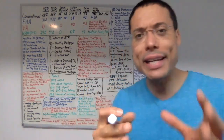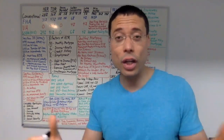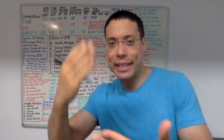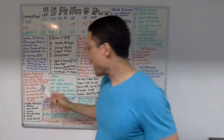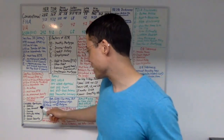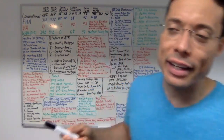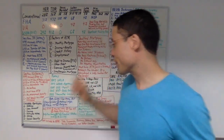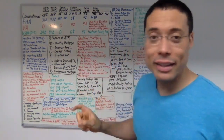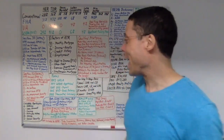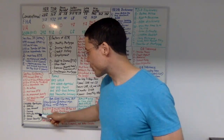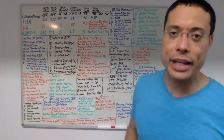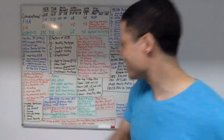What makes a complete application? The application is complete when it has the elements remembered by the acronym ALIENS: A is for address. L is for loan amount. I is for income. E is for estimated value. N is for name. And S is for social security number.